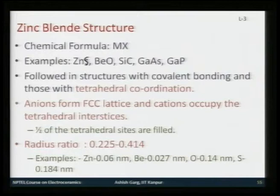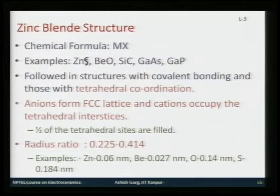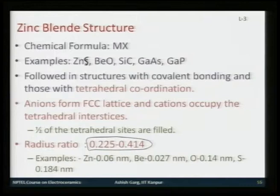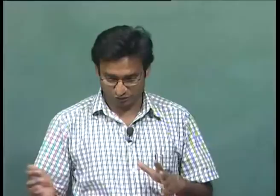As a result of covalent bonding, not only does the radius ratio predict tetrahedral coordination, but covalent bonding also requires tetrahedral coordination. So you may find in some cases that the radius ratio is slightly off. The predicted radius ratio for tetrahedral coordination is between 0.225 to 0.414. For zinc and beryllium oxides or sulfides this is in line, but for some compounds it may be slightly off because of the requirement of tetrahedral coordination due to covalent bonding.